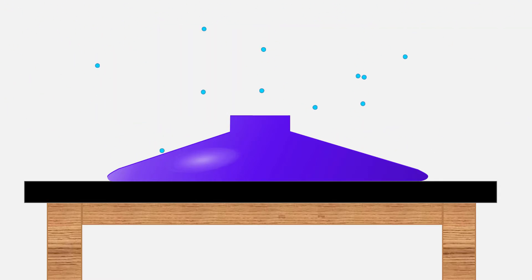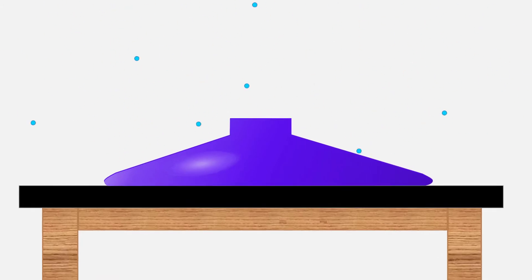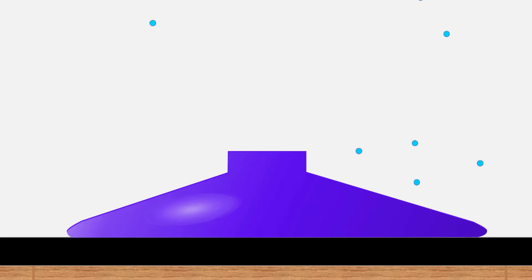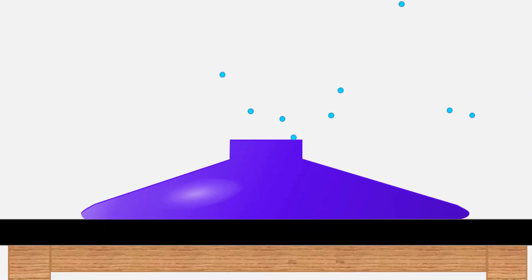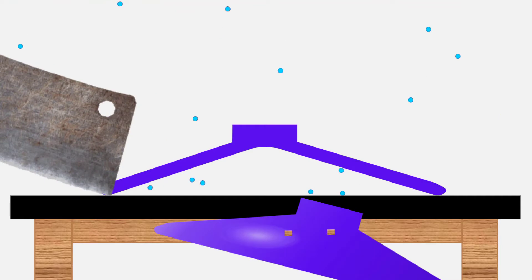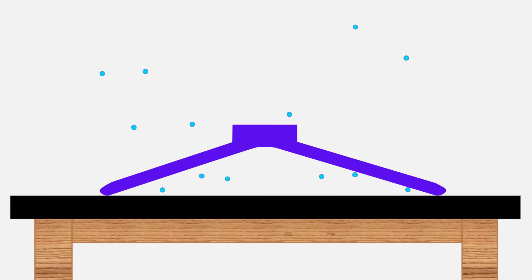Since air particles move in random directions, they are constantly colliding with the surface of the suction cup. But what is occurring on the other side of the suction cup? Let's take a cross section to see that there are air particles constantly colliding on the inside surface as well.